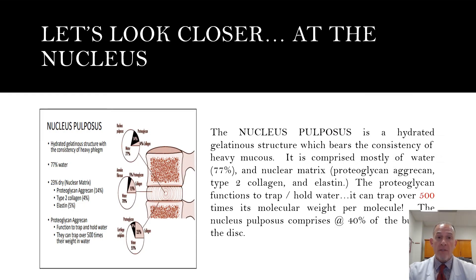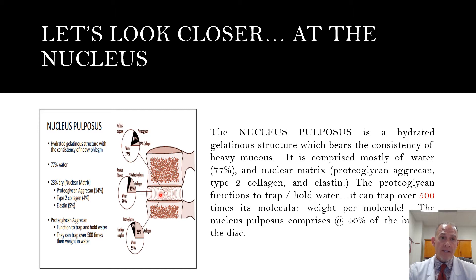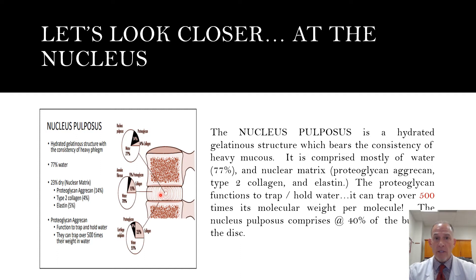Looking closer at the nucleus pulposus, the nucleus is located here on this diagram. The nucleus is comprised mostly of water — about 77% of it is water — and then other substances such as collagen, elastin, and that important proteoglycan aggrecan, which draws almost 500 times its own molecular weight in water into the disc. The healthy nucleus will produce adequate amounts of proteoglycan and maintain hydration of the disc, but the injured disc will not produce proteoglycan, and thus the disc cells will die or desiccate and dry out.